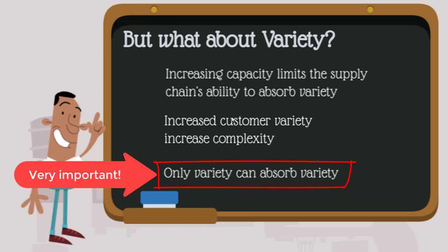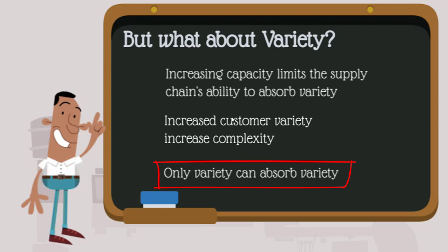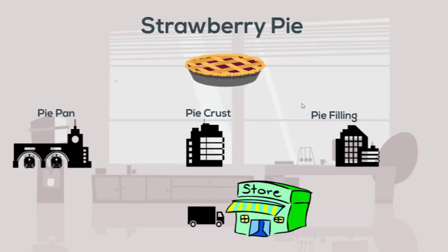Note that Ashby's First Law of Systems states that only variety can absorb variety. In order to increase the ability of the supply chain to absorb variety, you must design the supply chain with increased variety in it. This is the concept behind principles of postponement, where we basically design flexibility into the supply chain so that it will be better able to absorb variety.